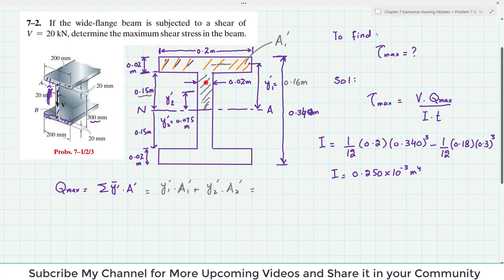And Y2 will be, since A2 is this is A2 dash. So the half of this, this height is 0.15. So the half of this will be Y2 dash from the neutral axis. Which is 0.15 divided by 2 is 0.075.